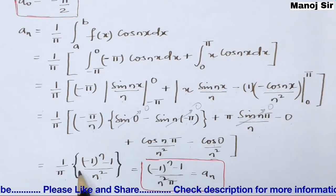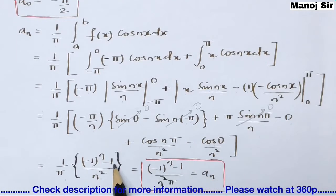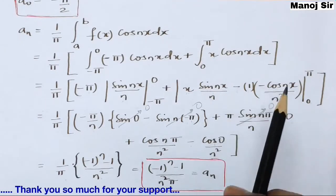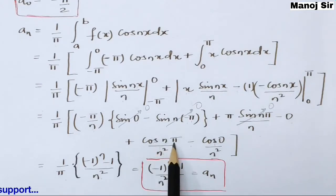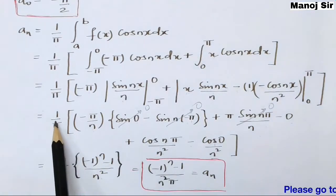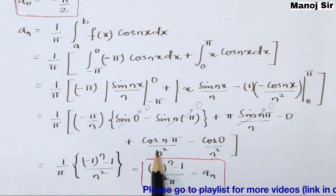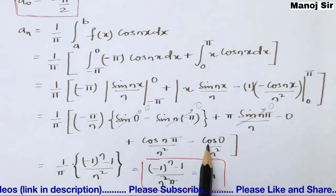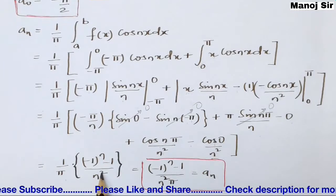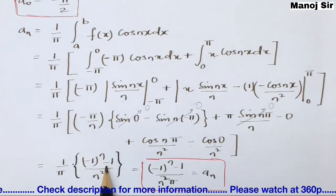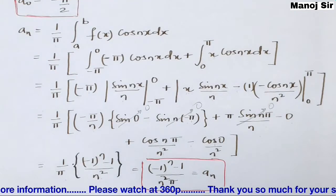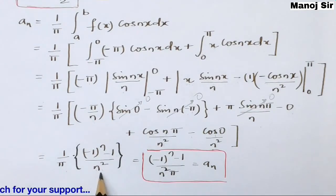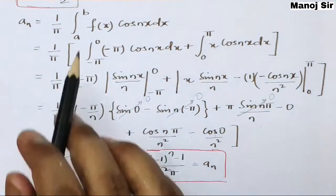After putting limits: sin(0) = 0 and the sine terms vanish. Using cos(nπ) = (-1)ⁿ and cos(0) = 1, we are left with (1/π)[(-1)ⁿ/n² - 1/n²] = (1/π) · [(-1)ⁿ - 1]/n². So aₙ = [(-1)ⁿ - 1] / (n²π).